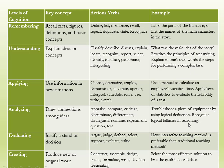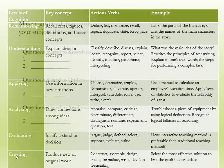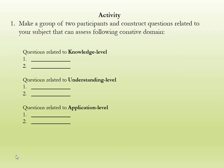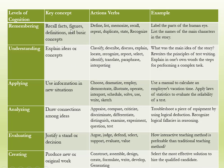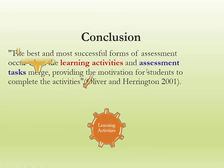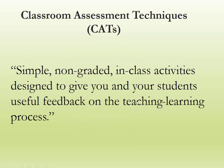These are some example questions a teacher can use to measure a particular level of cognitive domain. This is the basic idea of what the cognitive domain is and how many levels it has. The best and most successful form of assessment occurs when the learning activities and assessment tasks merge, providing motivation for students to complete the activity. Our student learning outcomes (SLOs) are assessed using this cognitive domain. Based on the keywords we use in assessment, test, quiz, or assignment, we can measure whether our instructional objectives have been achieved. Learning activities and assessment tasks are all connected.